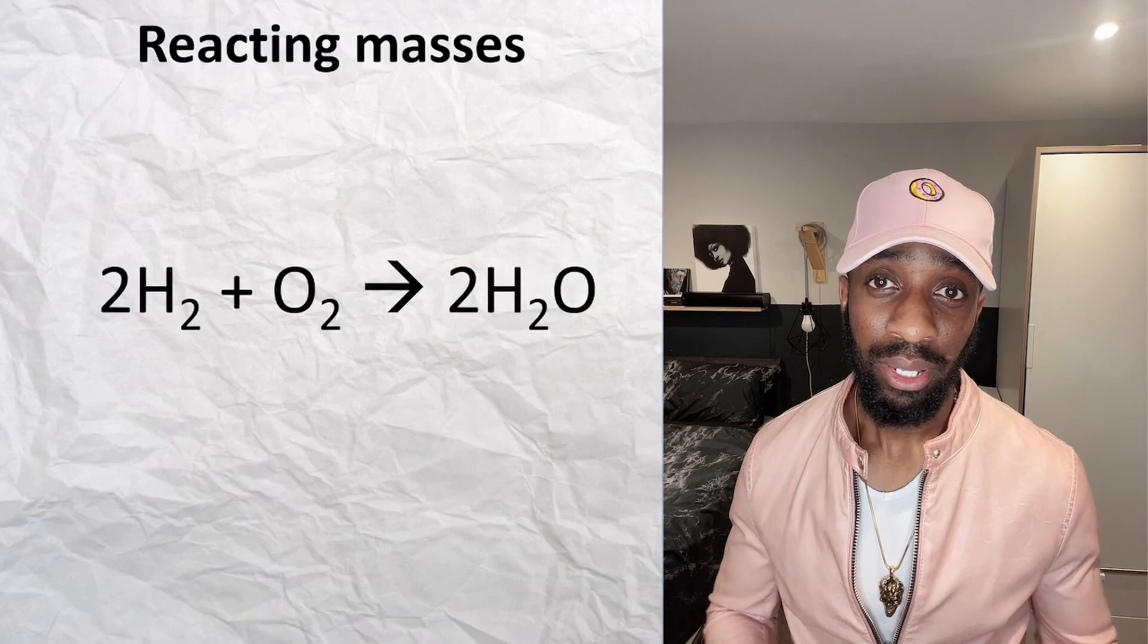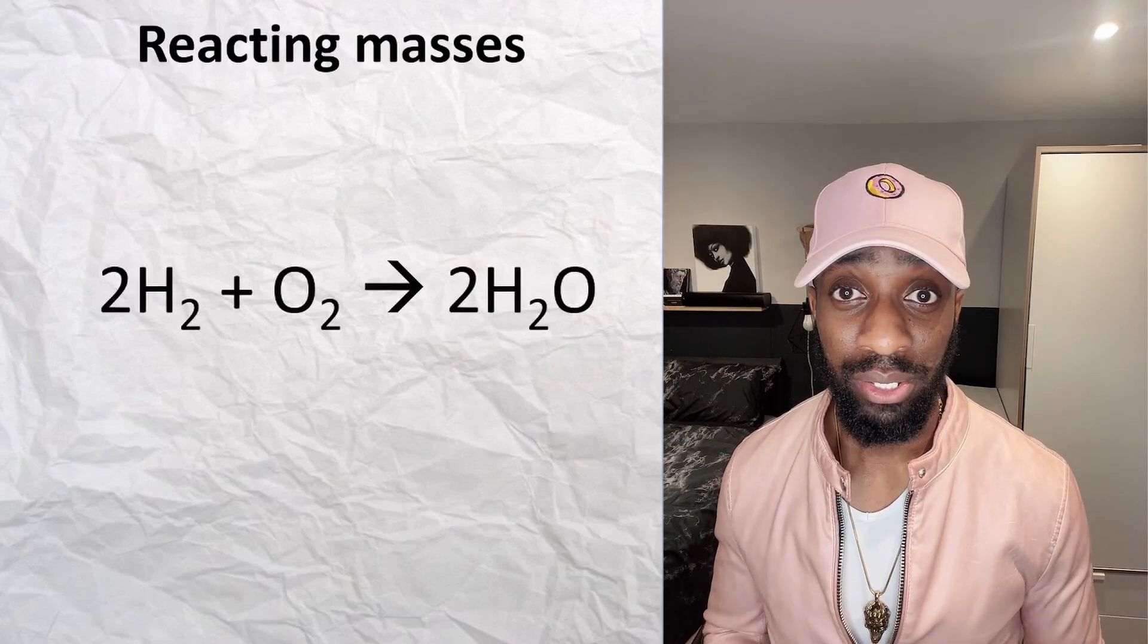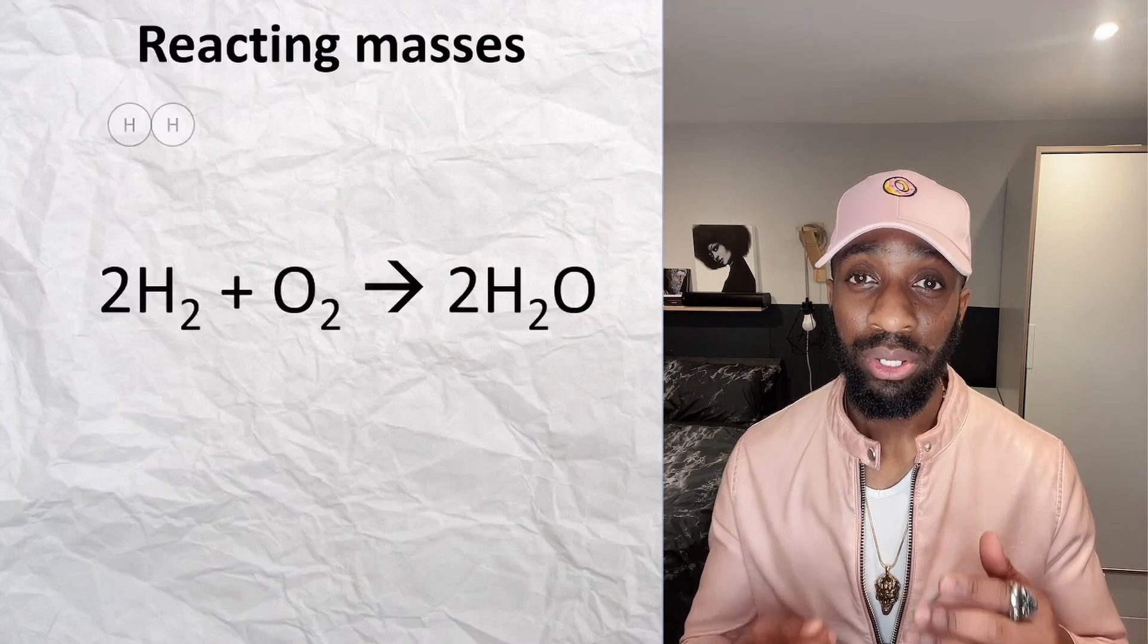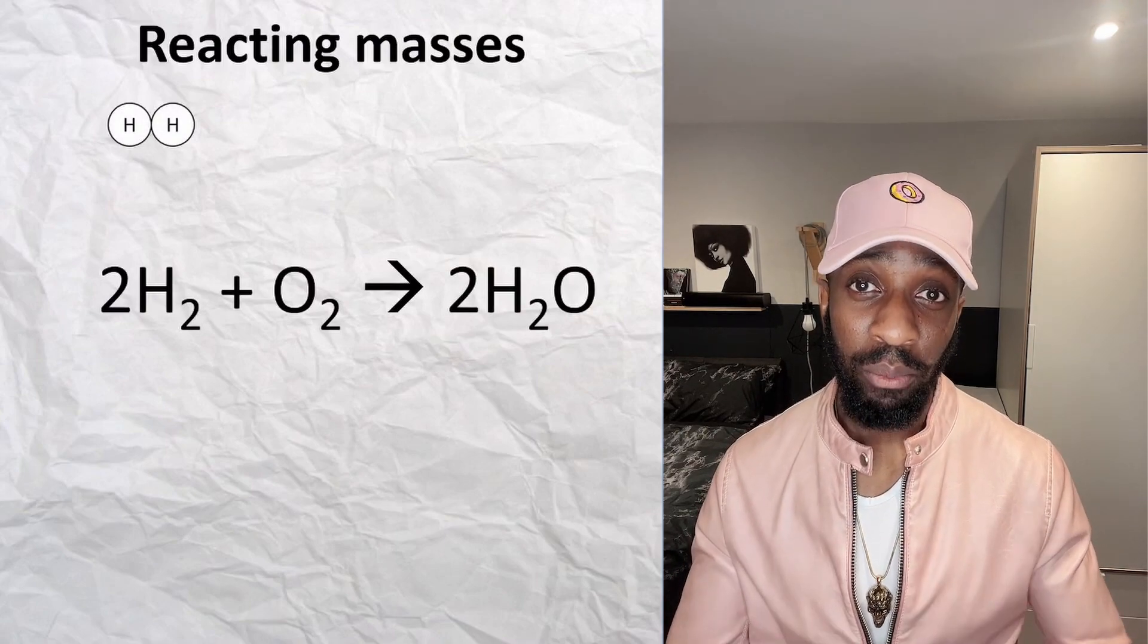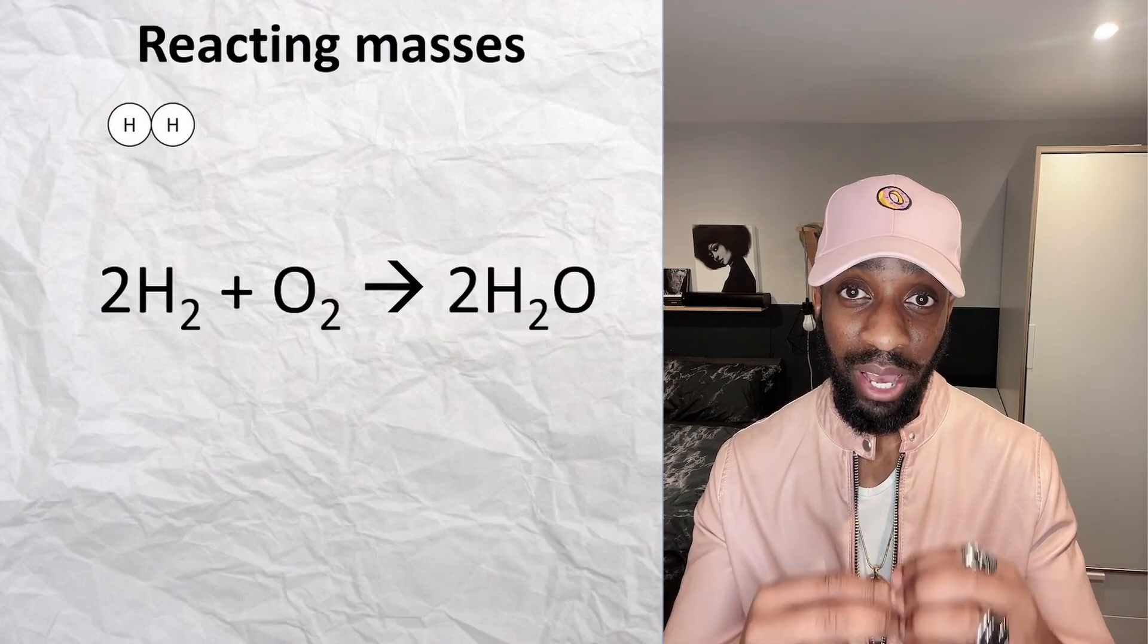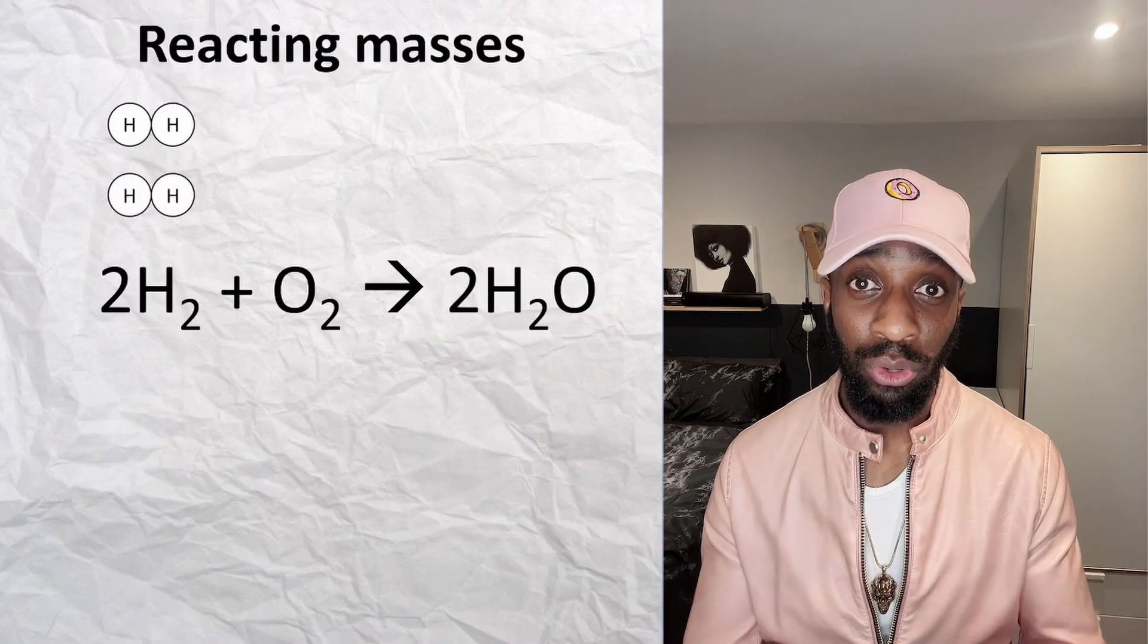To help you see what's going on here, let's draw what the atoms and particles in the substances would look like. We've got two moles of hydrogen, so H₂ means we've got two atoms of hydrogen bonded together, but because we've got two moles of that, we have to times that molecule by two.